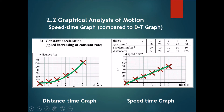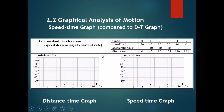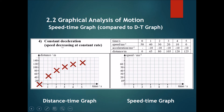Now let's do it for deceleration. On the distance-time graph: time 0 gives distance 0, time 1 gives 40, time 2 gives 80, time 3 gives 105, time 4 gives 120, and time 5 gives 125. As mentioned before, on a distance-time graph where it's decelerating, you should see a line curving downwards.